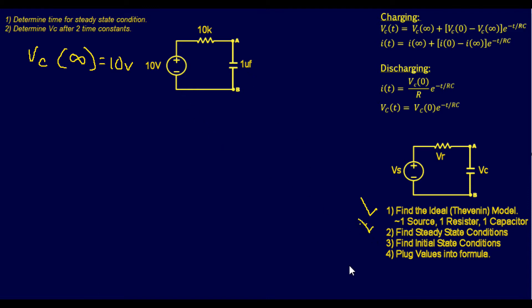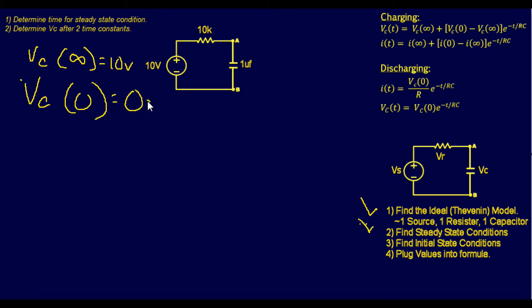Step three: find the initial conditions. We can assume the capacitor is uncharged at the start. Since it's uncharged, it acts as a short, which means there are zero volts across the capacitor. So VC at time zero equals zero volts. We've now found both our steady state and initial conditions. This is a simple problem — we'll get to harder ones shortly.